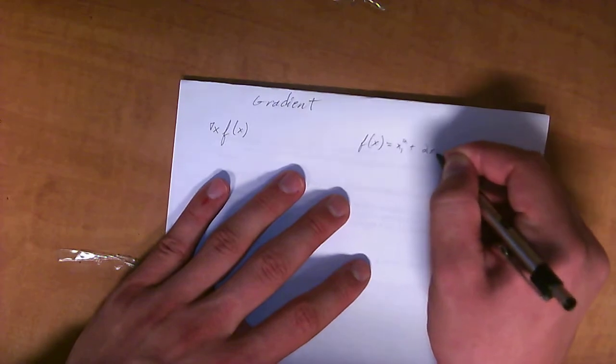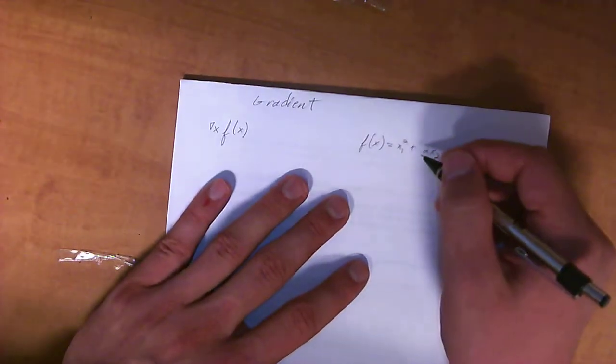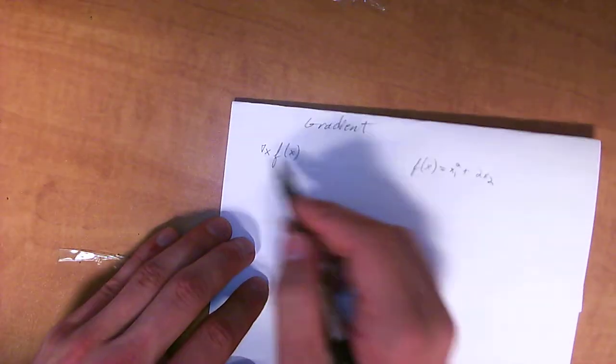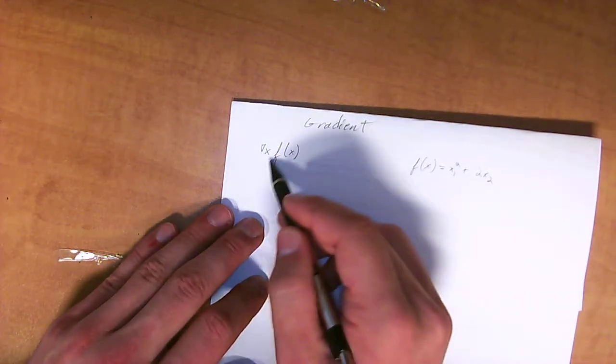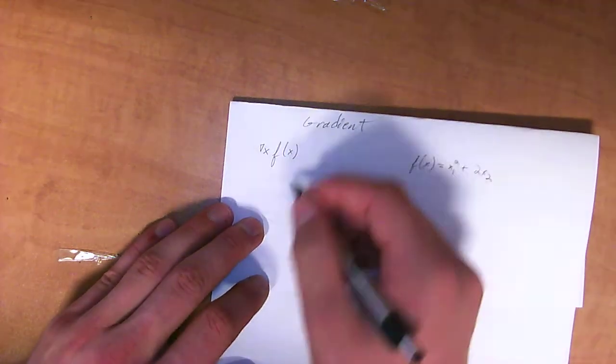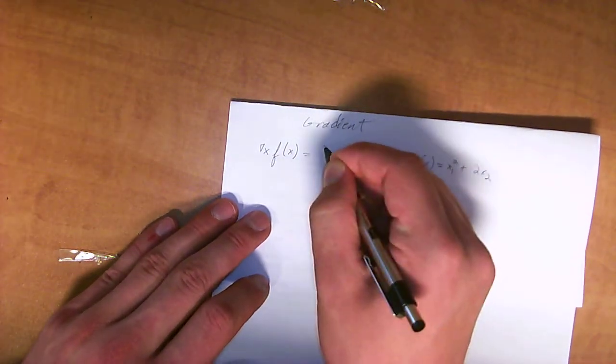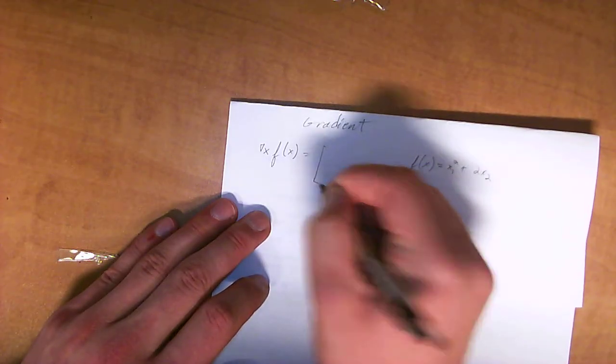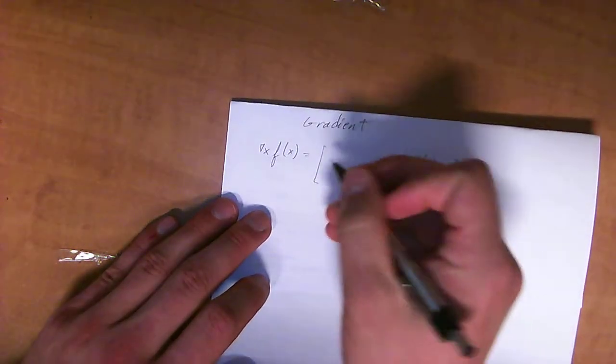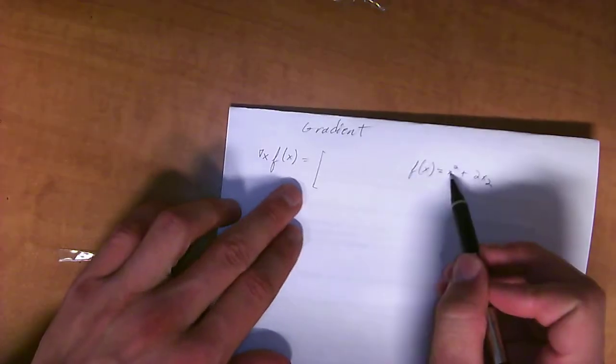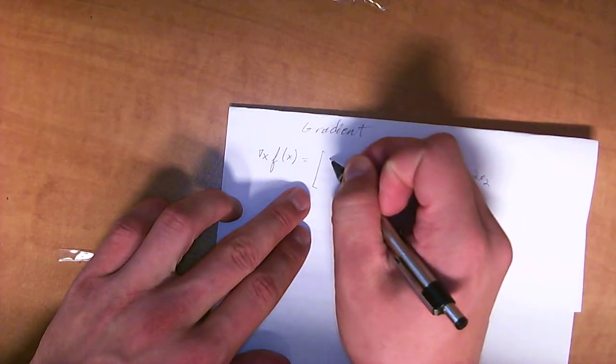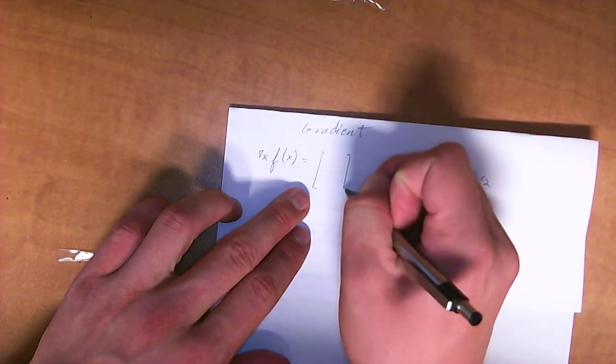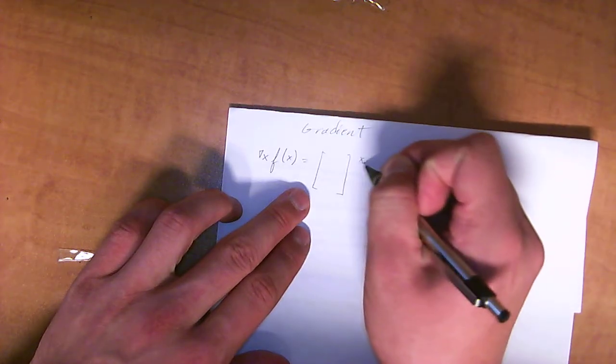then I can find that the gradient of f(x) is equal to a column vector of the partial of each one of these. So the partial with respect to x₁ and the partial with respect to x₂. If you have more variables, you just go on down the line like that.